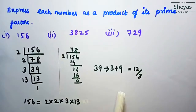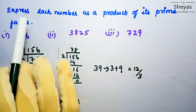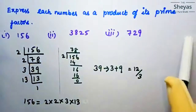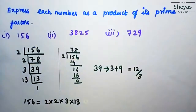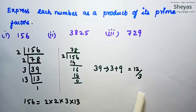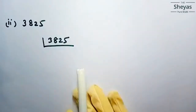Let us do the next problem. The question says: express each number as a product of its prime factors. Now let us take the next number: 3825.